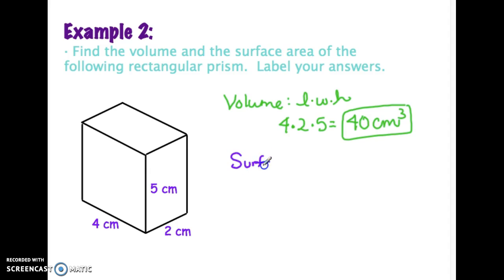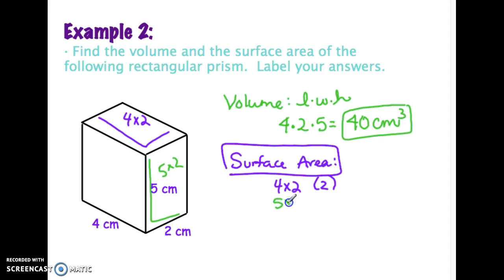When I do the surface area, you could have used the official formula, or you can logic it out. I kind of like to think, all right, this top face here looks like it's a four by two, so I'm going to have a four by two and I'm going to end up having two of those. The front here is a five by two, so I'll have a five by two, and again I'm going to end up having two of those. On the left side, that's a four by five, and again I'll end up having two of those.